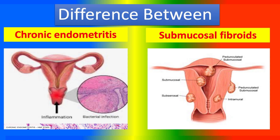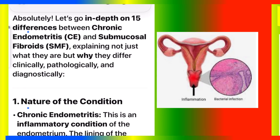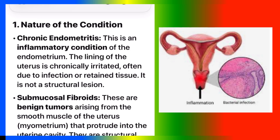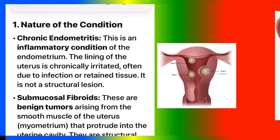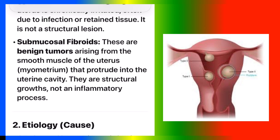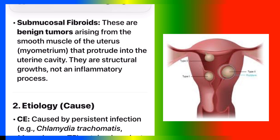This is a comparison between chronic endometritis (CE) and submucosal fibroids (SMF). Number one: nature of the condition. Chronic endometritis is an inflammatory condition of the endometrium. The lining of the uterus is chronically irritated, often due to infection or retained tissue. It is not a structural lesion. Submucosal fibroids are benign tumors arising from the smooth muscle of the uterus (myometrium) that protrude into the uterine cavity. They are structural growths, not an inflammatory process.